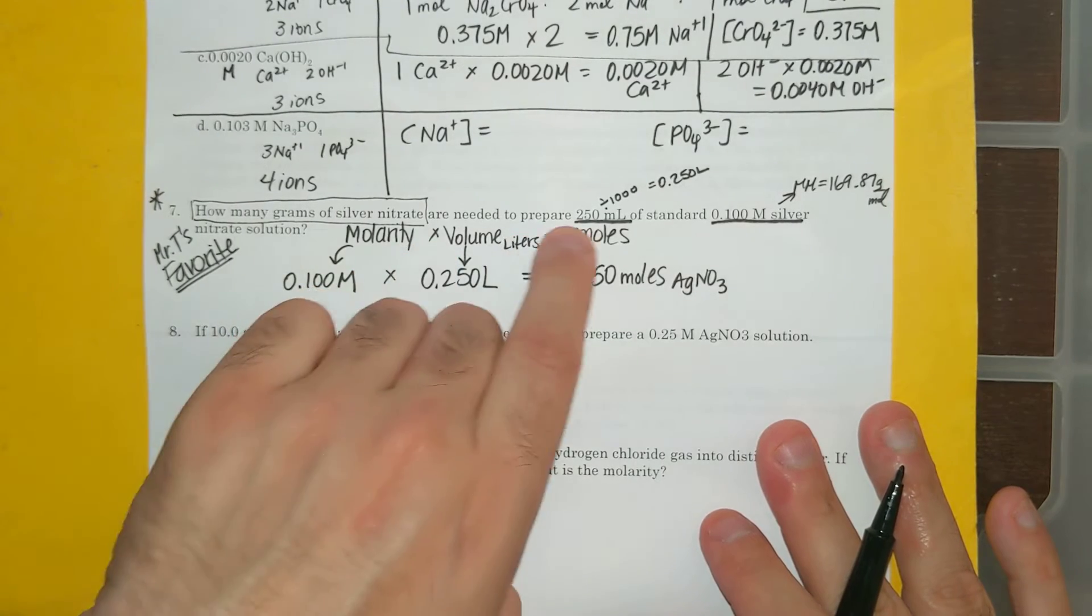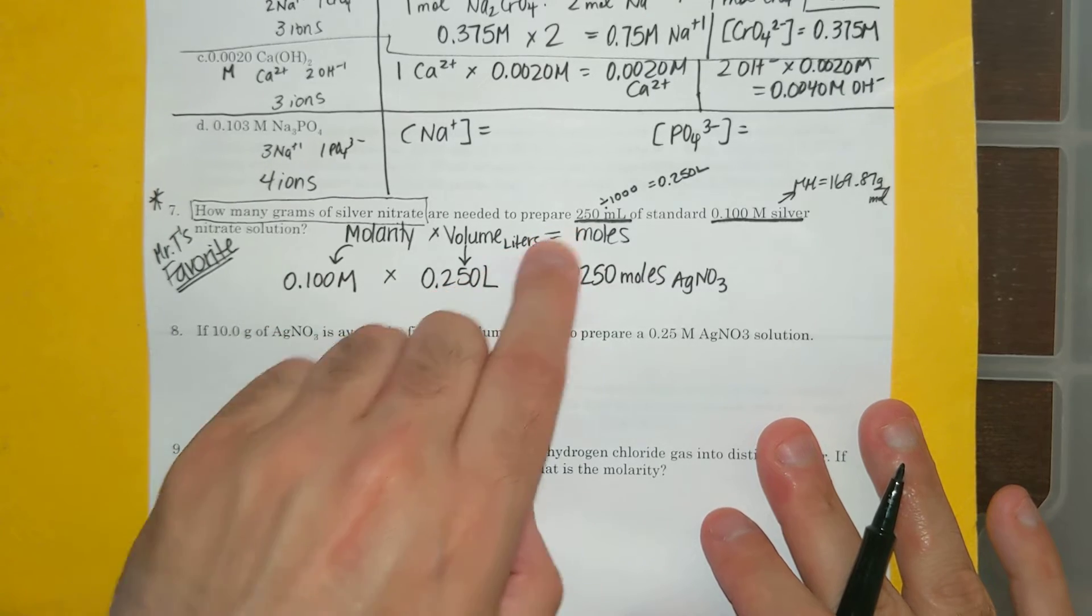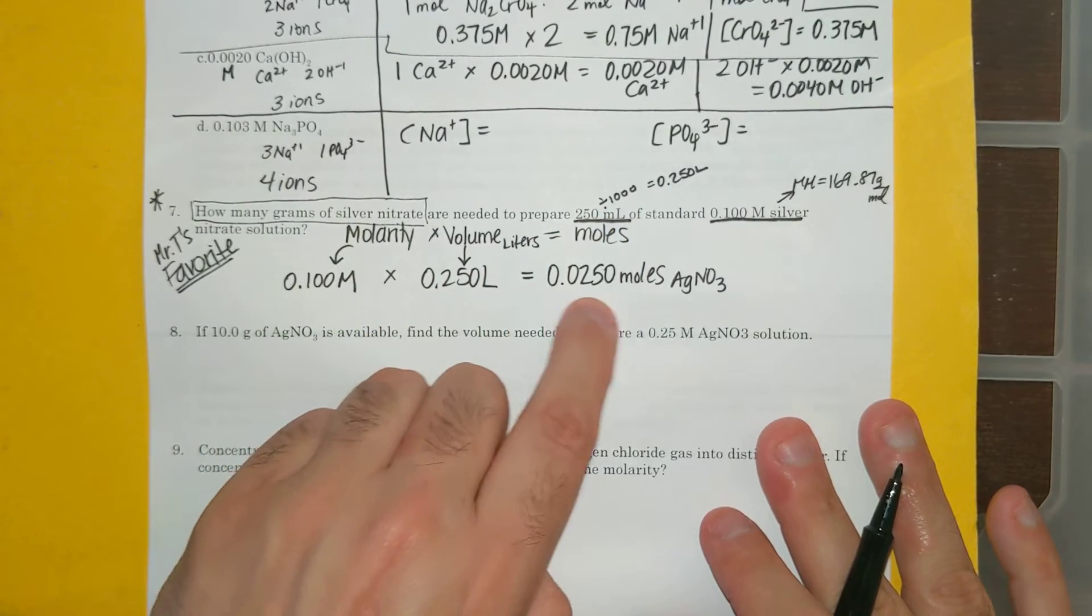So my molarity was already given to me. To remind you again, how did I get my volume in liters? I divided by 1000, and that gave me my moles.